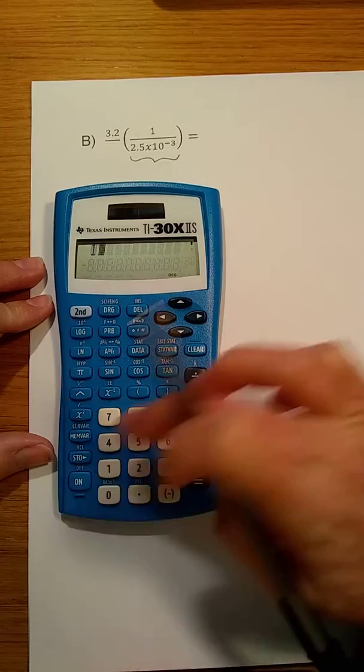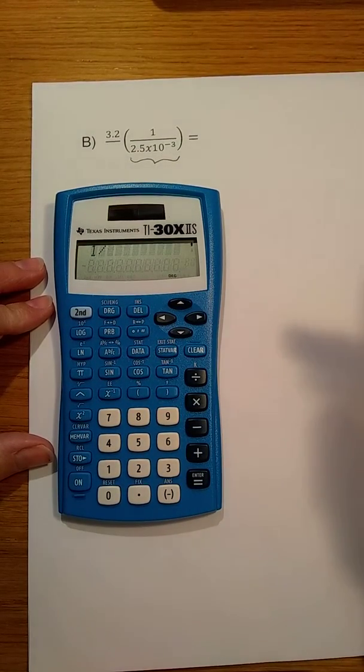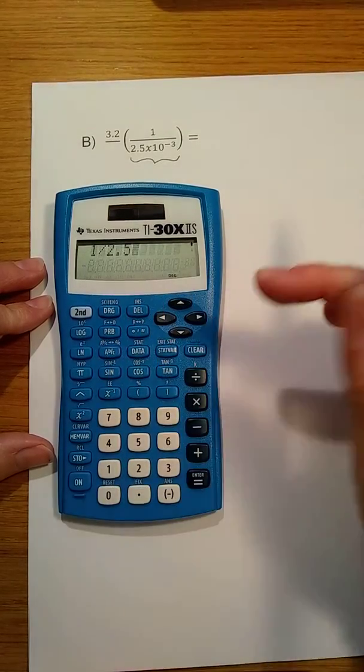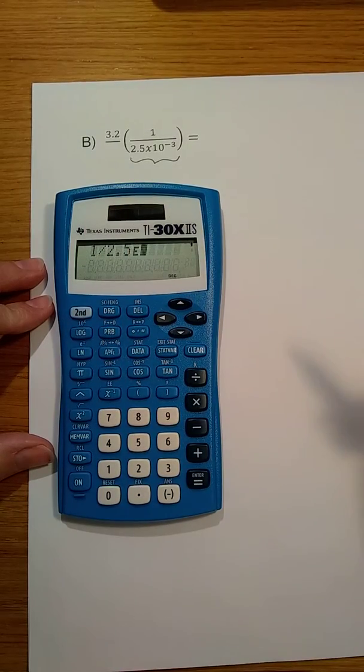So we'll take 1 divided by 2.5 times 10 to the minus 3. To enter this number, we put in 2.5. We use the second function to get the EE key, which gives us our exponent.